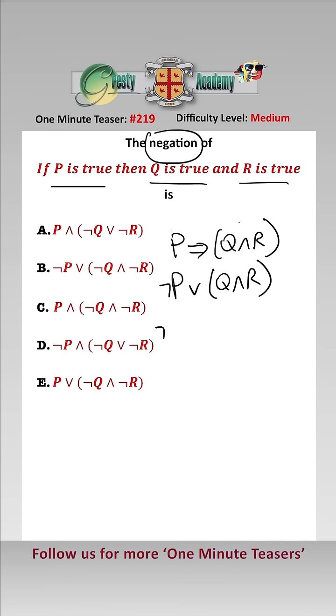And they ask us for the negation, which is not not P or Q and R. So all we need to do is sort this out now.